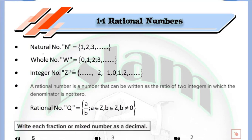The smallest set of numbers that we know is defined by the natural numbers, which are the numbers that we use for counting. When I ask you to count any element, just start from 1, 2, 3, 4 and so on. All of those numbers are defined by the natural numbers.